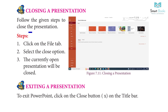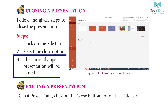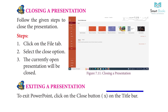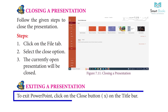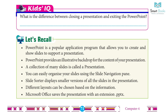Closing a presentation — follow these steps: Step 1: Click on the File tab. Step 2: Select the Close option. Step 3: The currently open presentation will be closed. Exiting PowerPoint: Click on the Close button (X) on the title bar. Quick question: What is the difference between closing a presentation and exiting PowerPoint?